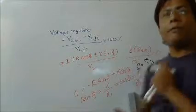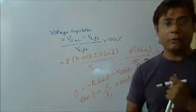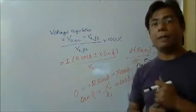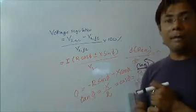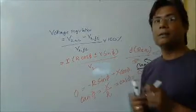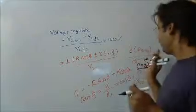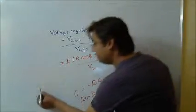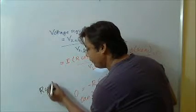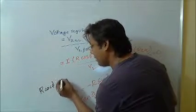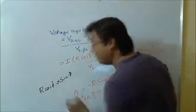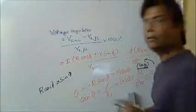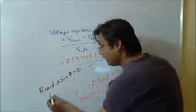We have seen the condition for maximum voltage regulation. We should also know the condition for zero or minimum voltage regulation. Again, I will put this to 0: R cos φ minus X sin φ equals 0. What will I get?